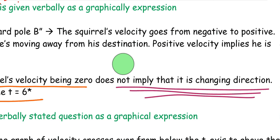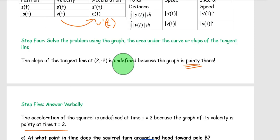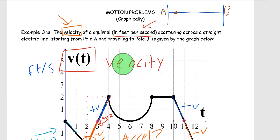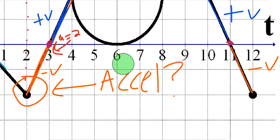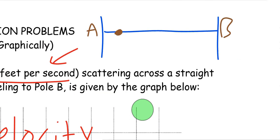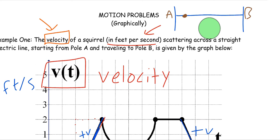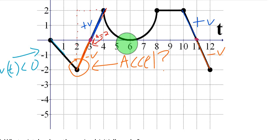But the converse of that, or the inverse of that, is not true. Just because it's zero doesn't mean it changes sign. Take a look at the graph right here. The squirrel's velocity goes from positive to zero, and then goes positive again. So what does that mean in terms of the linear motion? Basically the squirrel's moving forward, it stops for a brief second, and then keeps moving again. So it didn't change direction, did it? So be careful about that.